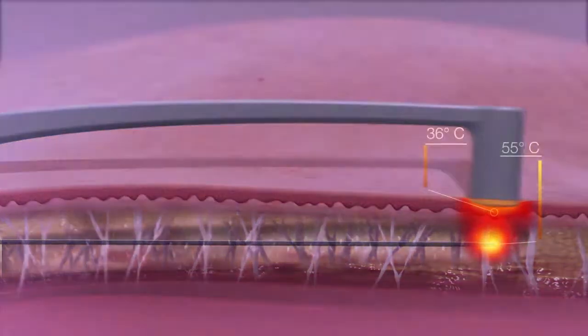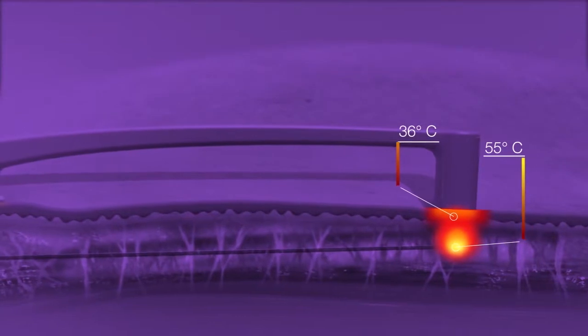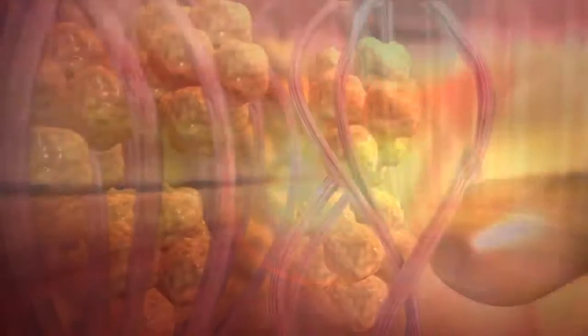RF energy flows from the internal cannula toward the external electrode placed on the skin surface. RF power is regulated based upon online measurements of skin temperature and tissue impedance.